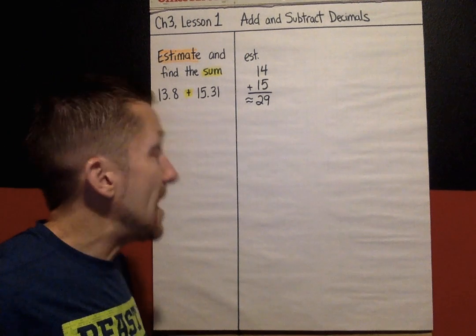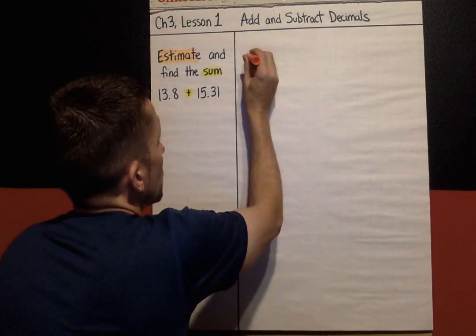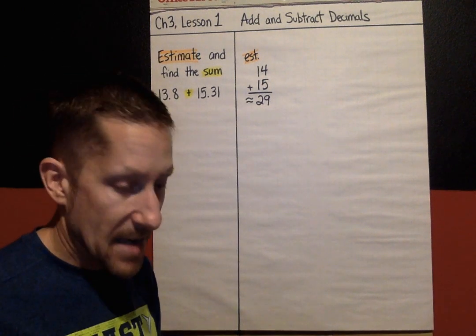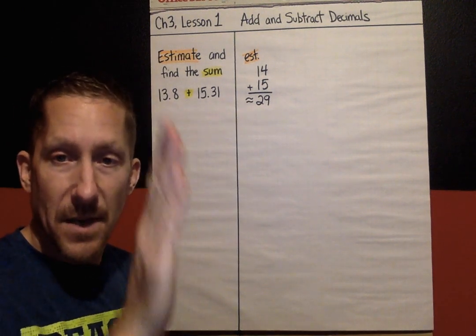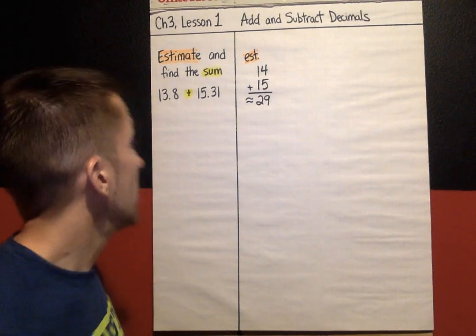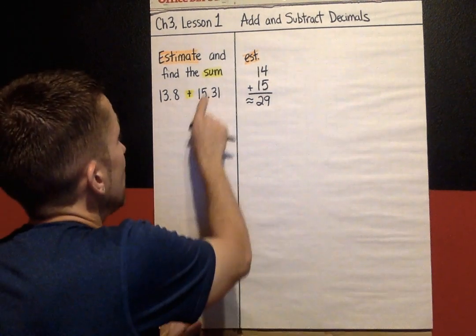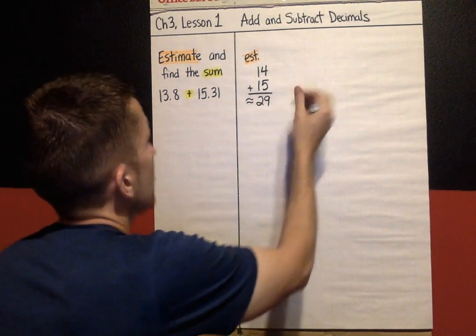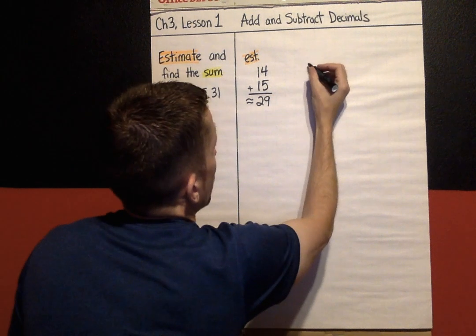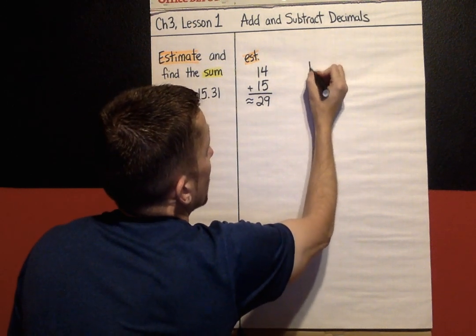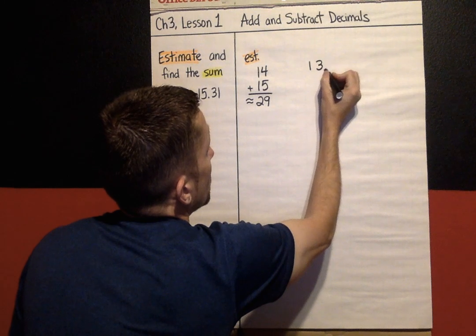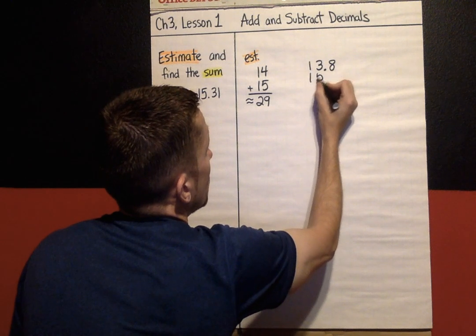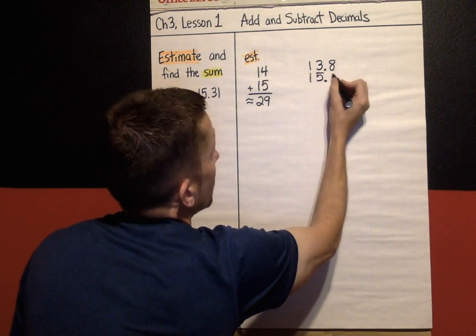So now let's find the exact sum. So your strategy when you are adding or subtracting decimals is that the decimal has to be completely lined up in a straight line. So now let's add, let's find the exact sum. Again, our answer, that's a quick estimate. Now we're going to find the exact. So I'm going to make sure that I have these lined up. My sum, 13.8 and 15.31.